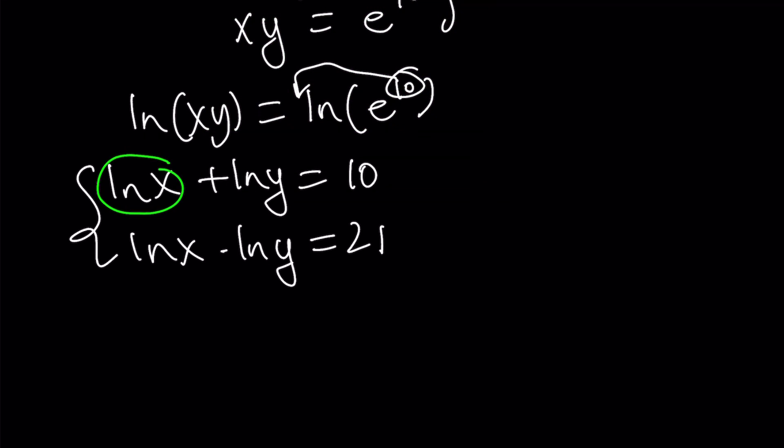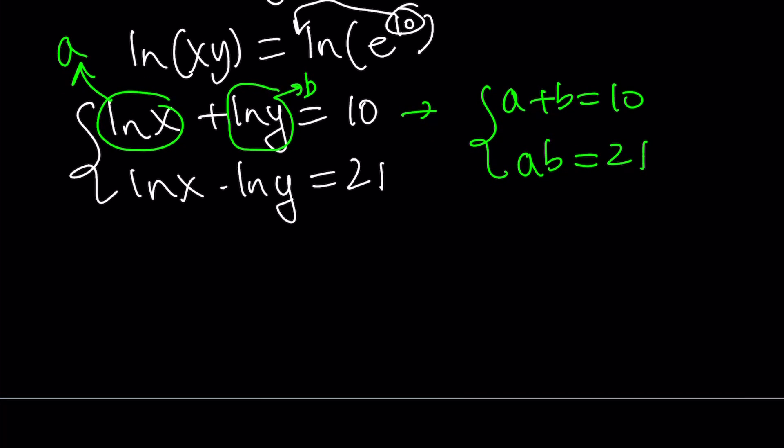Let's call this a. And let's call this b. And from here we get the following: a plus b is equal to 10, and ab is equal to 21. So that's an easier system that's actually going to turn into a quadratic. We're basically looking for two numbers whose product is 21 and whose sum is 10. Those numbers are 3 and 7. Very easy to guess, right?